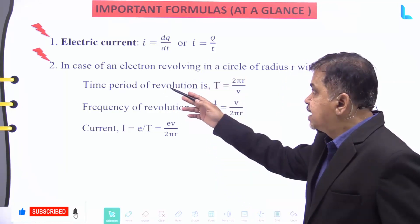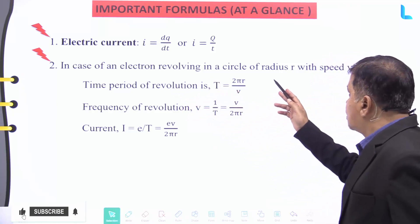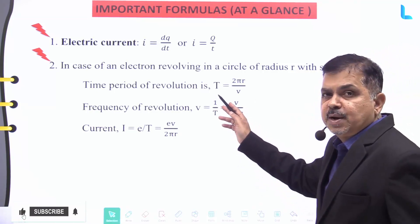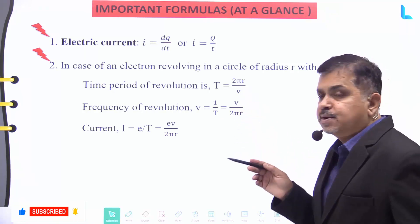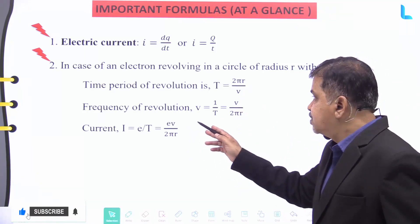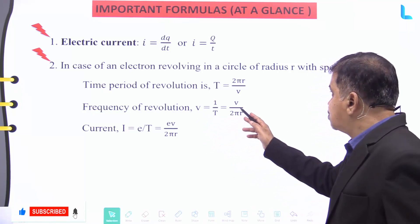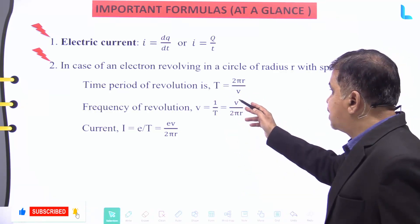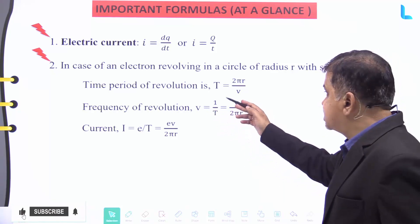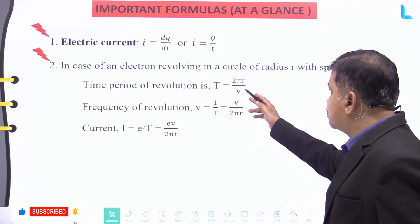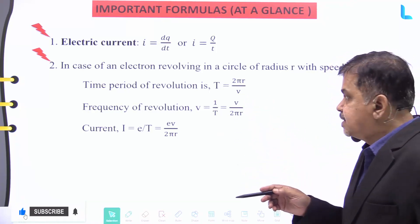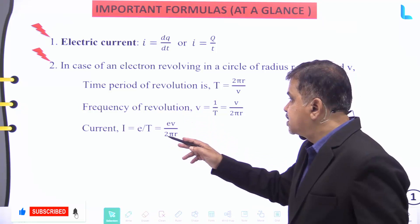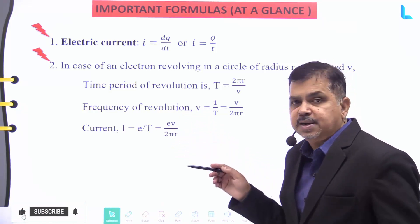In the case of an electron revolving in a circle of radius r and with speed v, the time period of revolution is T equal to 2πr divided by v, and the frequency of revolution ν is given by 1 by T, equal to v divided by 2πr. The current I is given by e divided by T, which equals ev divided by 2πr.